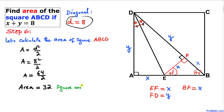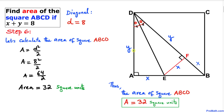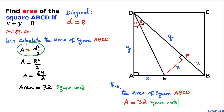To recap: we knew x plus y equals 8. Using the angle bisector theorem we concluded the triangles are congruent, figured out diagonal BD equals 8, and used the area formula to get our answer. Thanks for watching, and please don't forget to subscribe for more exciting videos!